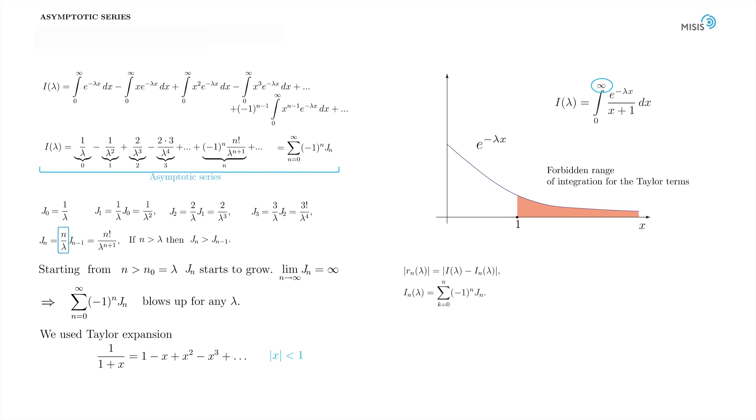I'll give you the formal definition later, but right now let's plot the error function, which is simply the modulus of the difference between exact integral and partial sums of our asymptotic series. We plot it as a function of the number of the corresponding approximation terms entering the partial sum of the series, and we see what we expected to see.